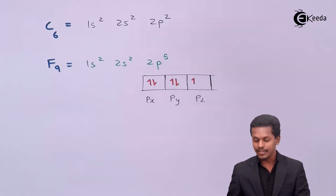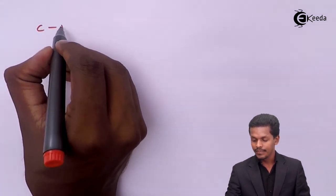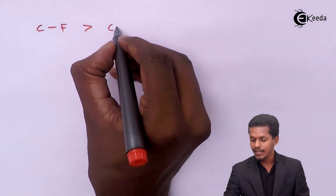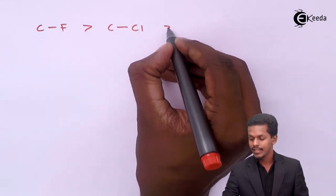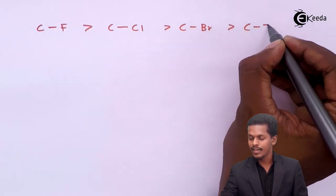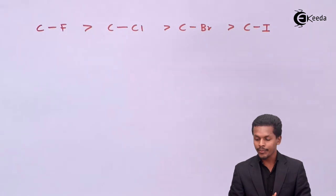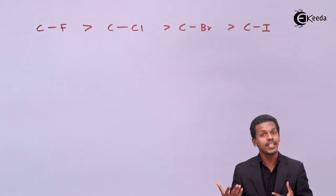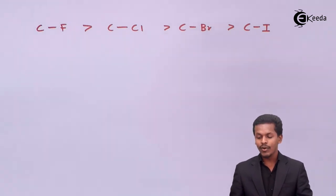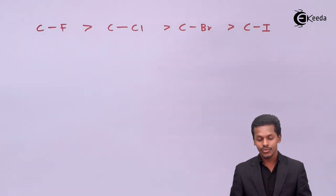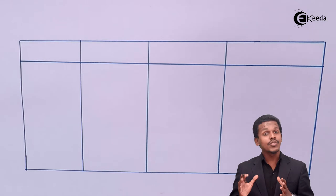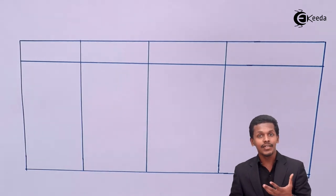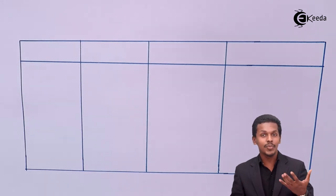The bond strength of carbon-fluorine is comparatively greater than that of carbon-chlorine, which is greater than carbon-bromine, and so on. This is the nature of the bond — which bond is stronger compared to the others. Let us now compare different physical properties to further estimate the nature of the carbon-halogen bond.